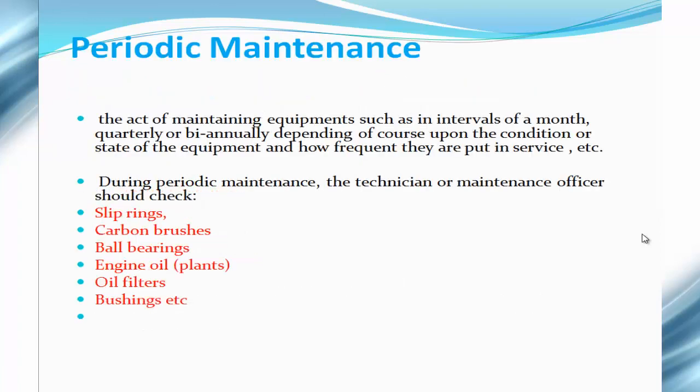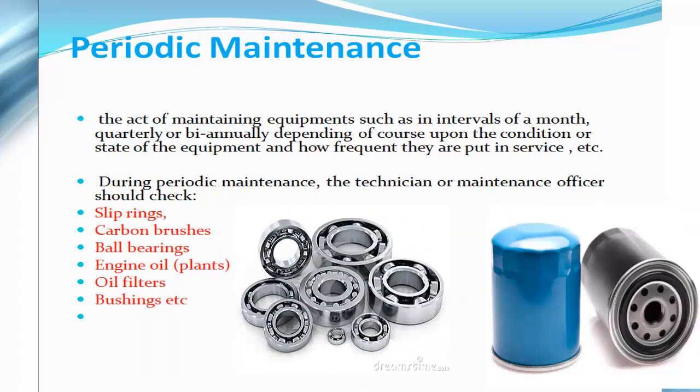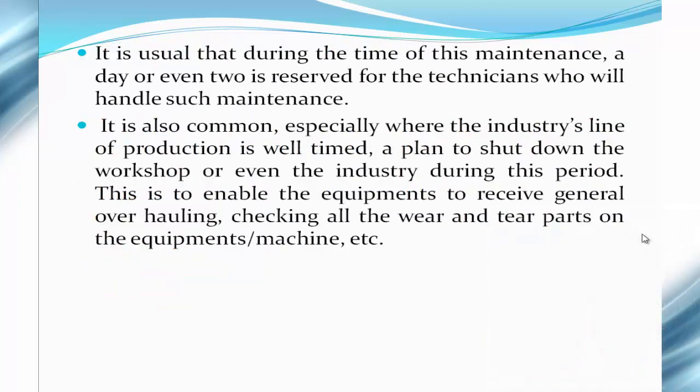The periodic maintenance is the type of maintenance carried out on a periodic basis — not daily, but at intervals of a month, biannually, or quarterly, depending on the condition of the equipment and how frequently it is put into service. During periodic maintenance, the technician is expected to thoroughly check items like slip rings, carbon brushes, ball bearings, engine oil plants, oil filters, bushings, and so on. A day or two is usually reserved for the maintenance officers handling such maintenance.